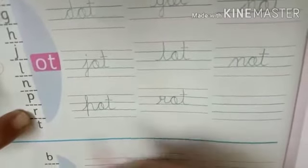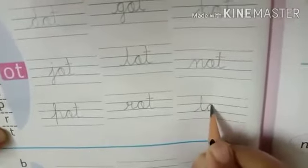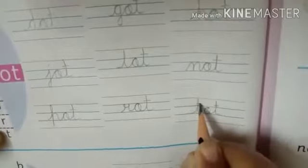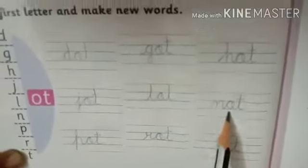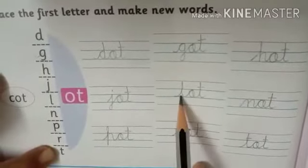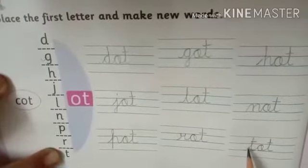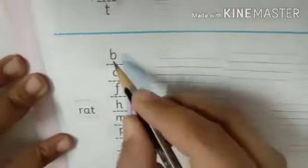And last: T, O, T — tot. You can see that all words share the same ending. We have replaced only the first letter. We change the first letter to make new words.